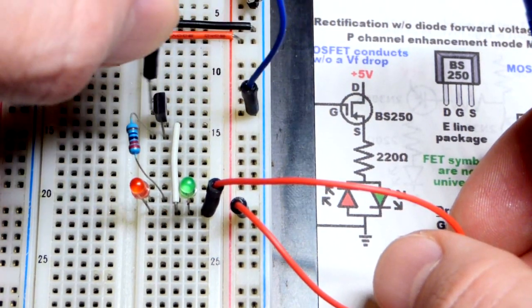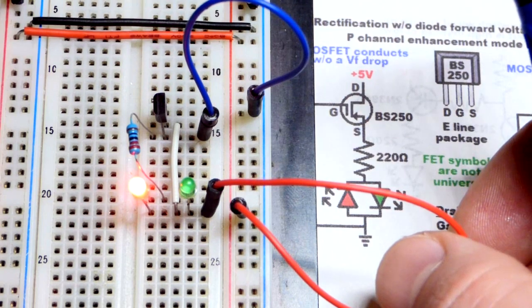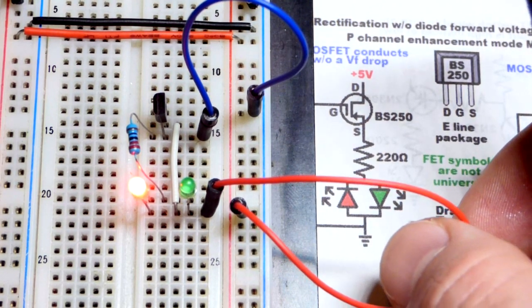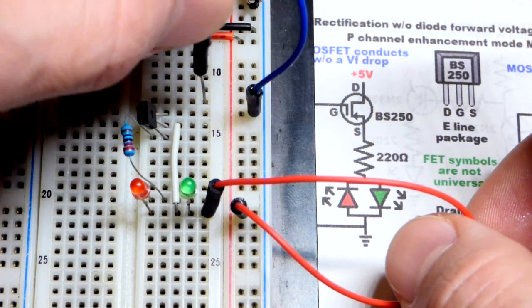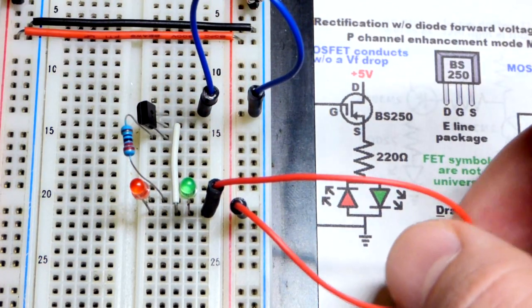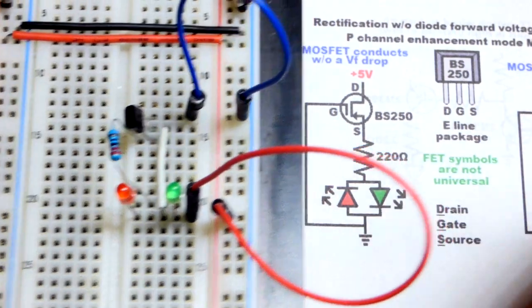But if I bypass the transistor, come down, now it is lit up. If that's what we're avoiding, based on polarity, then this is what we could do. Just take a P-channel enhancement mode MOSFET and wire it up, as you can see here.